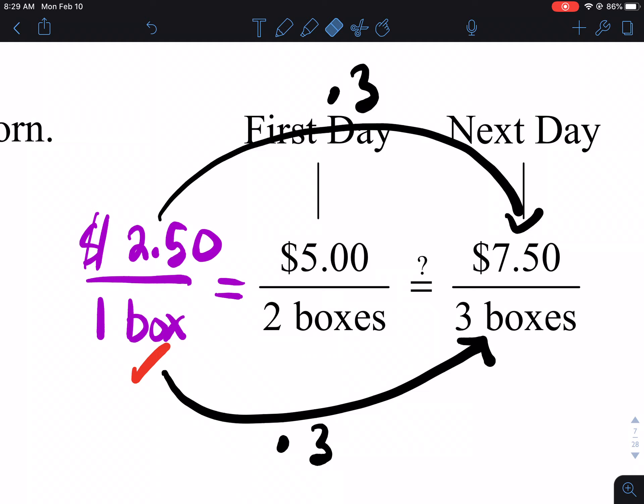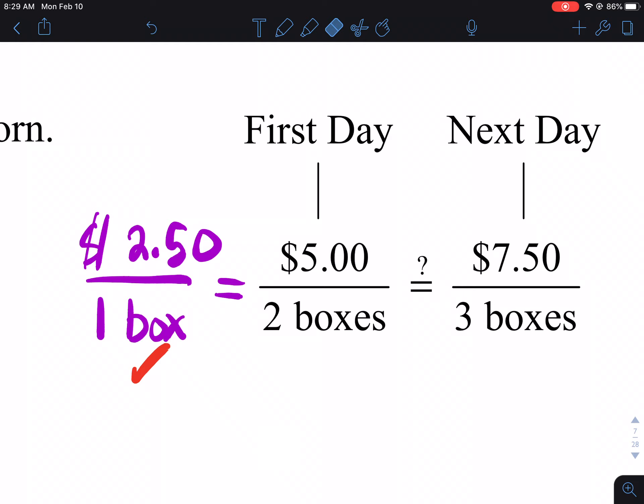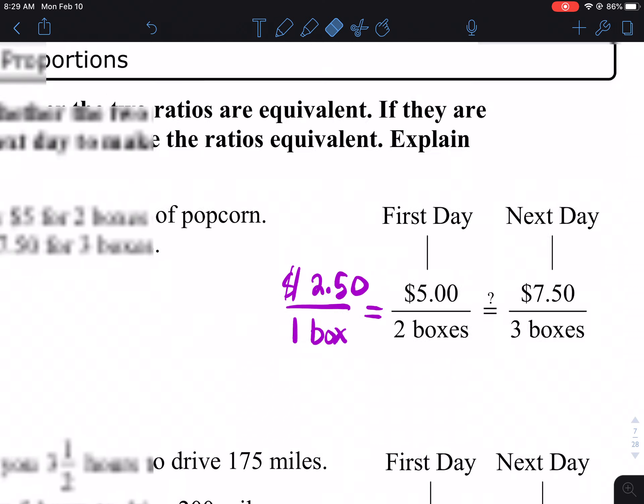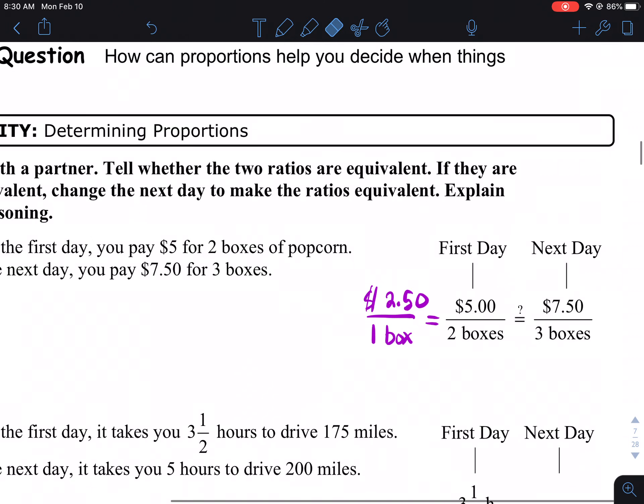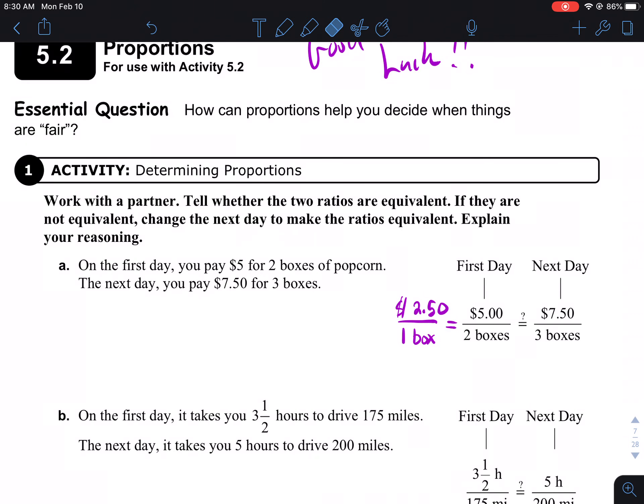So what do we know? We know what we see here, all three fractions are equivalent. And so it's fair. I'm just going to erase this so we can see what's going on. We now know that the unit rate, 250 per box, is equal to five dollars for two boxes. It's also equal to 750 for three boxes. It's the same rate of 250 per box. Does that make sense? So that's your idea, okay?